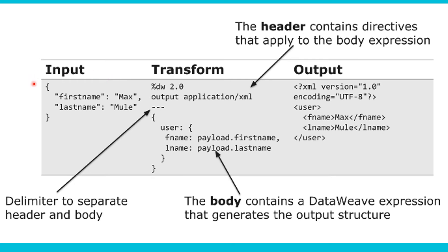For example, in the input you have firstName, but in your output you want Fname. Here you are transforming it by writing Fname: payload.firstName — you are assigning the value of payload.firstName to Fname. Same applies with Lname.